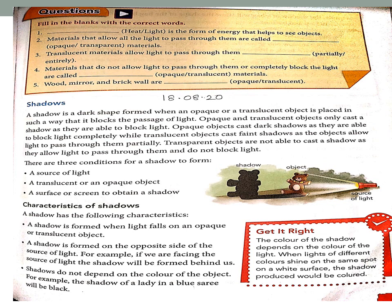Opaque and translucent objects are the only ones that cast a shadow. There are three types of objects: transparent, translucent, and opaque. Only opaque and translucent objects can block the light, so only they cast shadows. Transparent objects do not block the light.